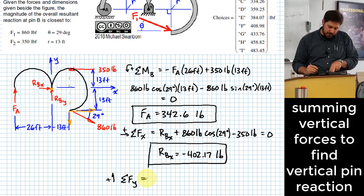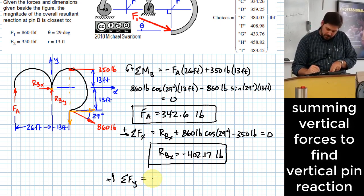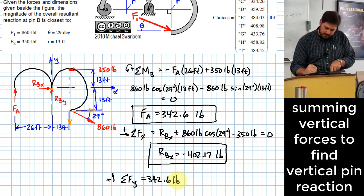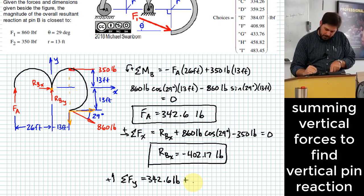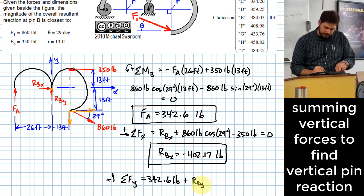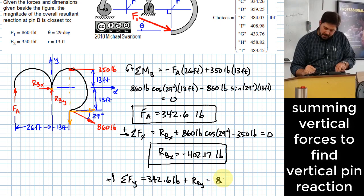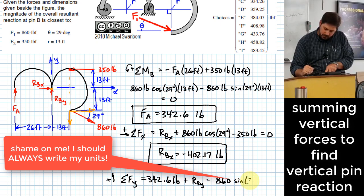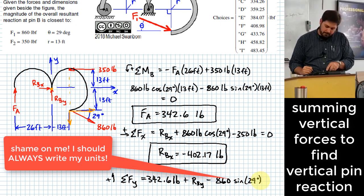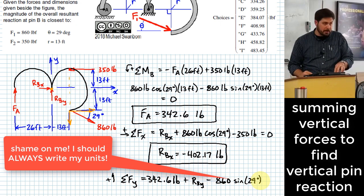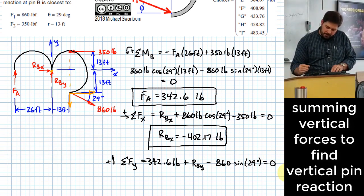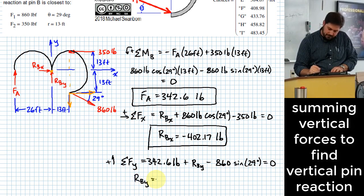Summing forces in the Y, I have FA, which is 342.6 pounds. What else? Summing forces in the Y, I have FA which is 342.6 plus RBY minus 860 times the sine of 29 degrees. Does that take care of all of my vertical components? Set that equal to zero and solve for RBY.